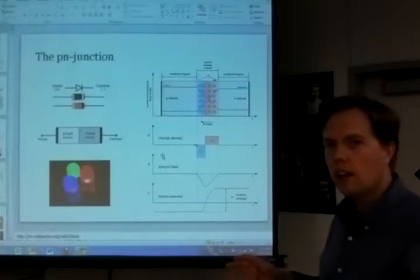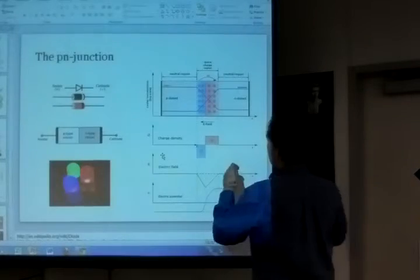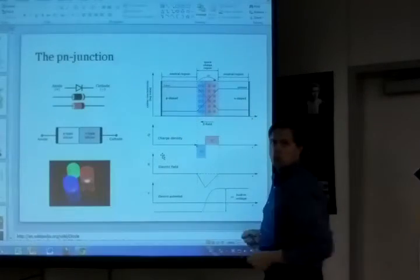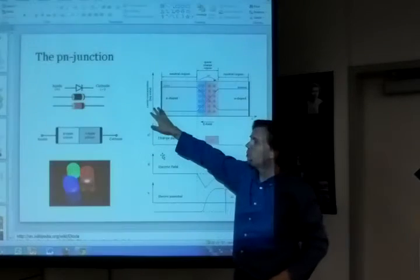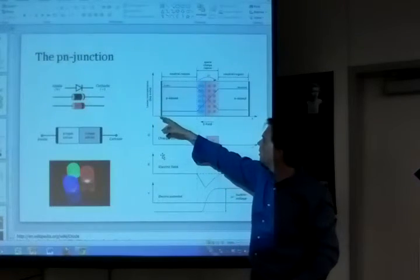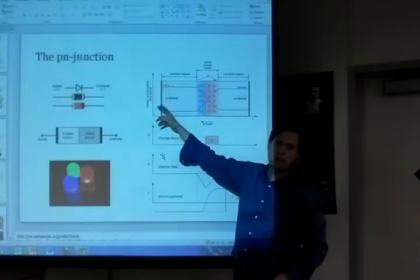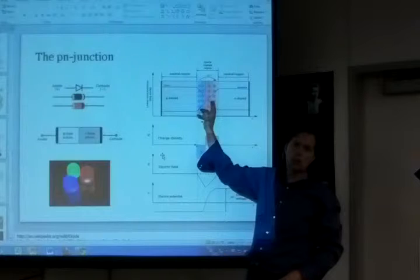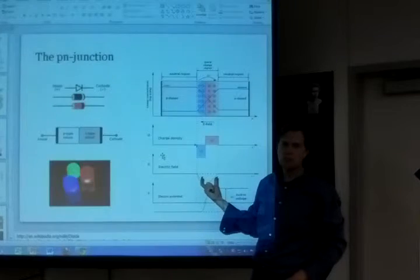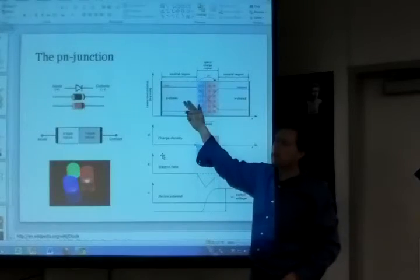Now if we take a battery and attach it to this PN junction, suppose we put the positive terminal here. The positive terminal is going to attract these negative charges. Now these negative charges are also attracted to the positive charge due to the internal field. So they don't flow immediately.